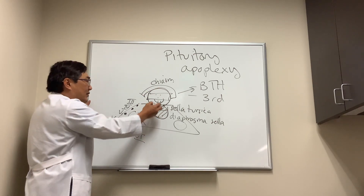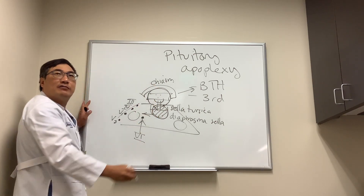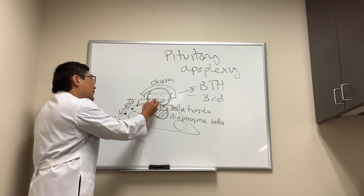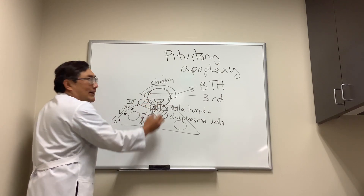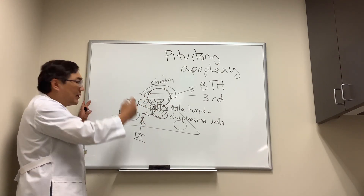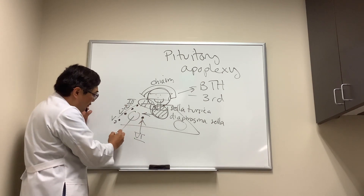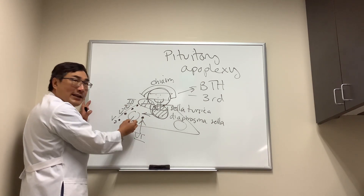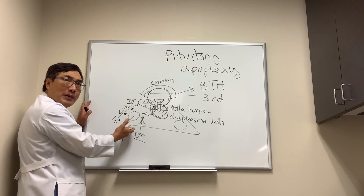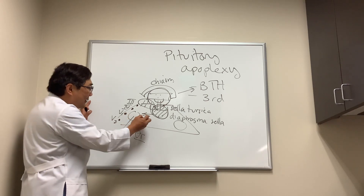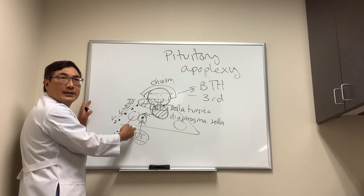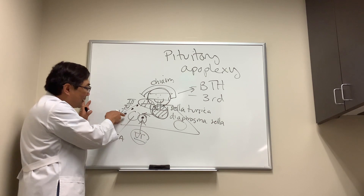Tumor is lazy. Even though a pituitary tumor can go laterally, it usually takes the path of least resistance, which is right up through the diaphragma sellae. That means when it grows, it's more likely to hit the third nerve at the top of the cavernous sinus.